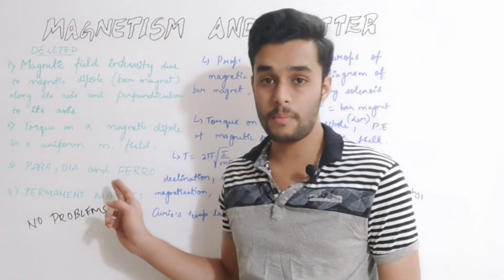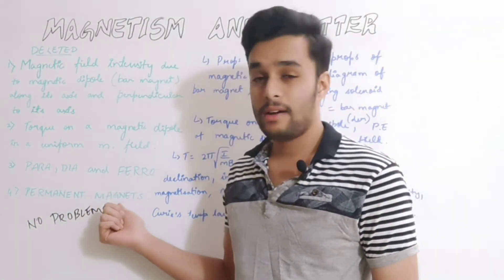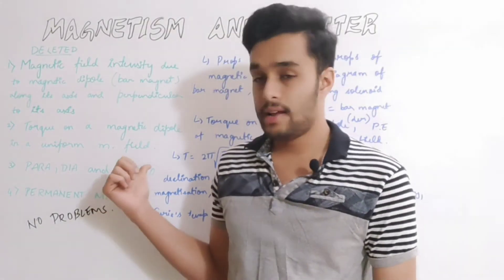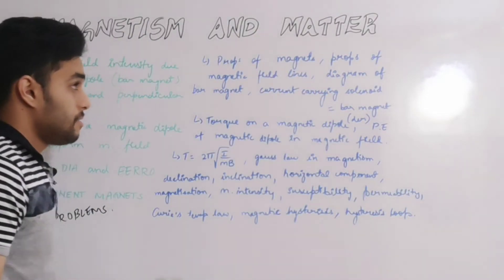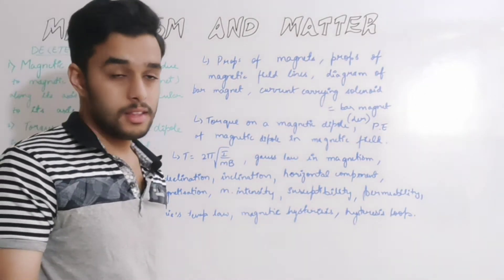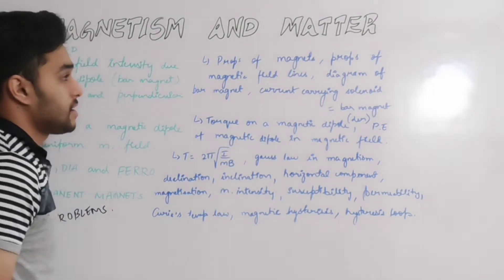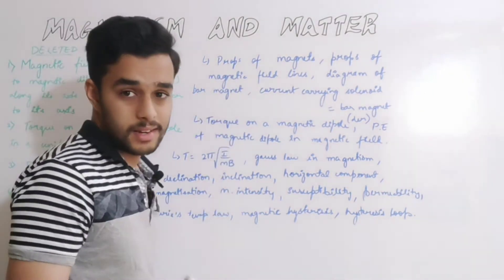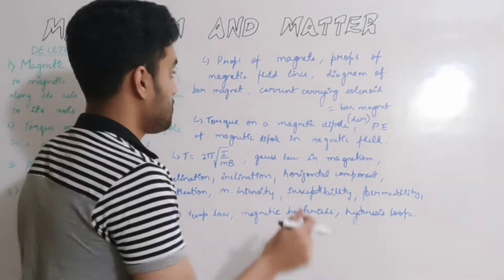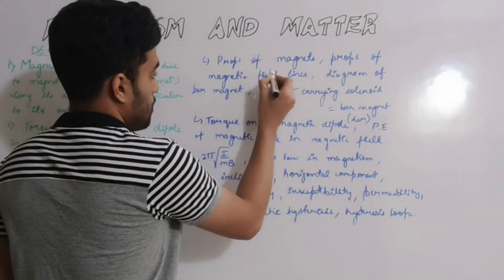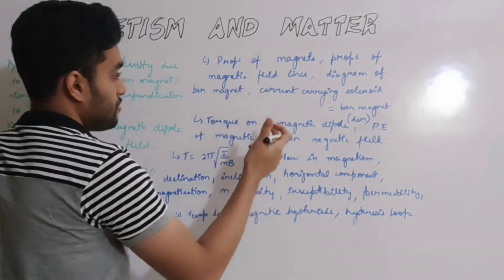Next thing is permanent magnets, which is a small topic. So these are the important topics and questions for this year. First thing is properties of magnets, which are the starter topics you need to learn in this chapter.